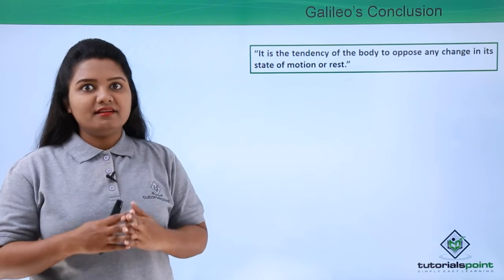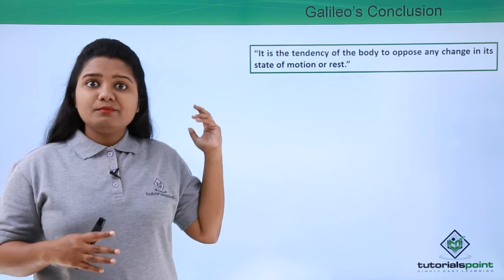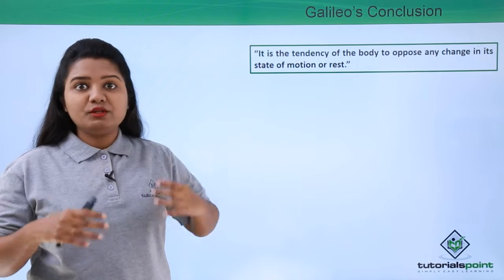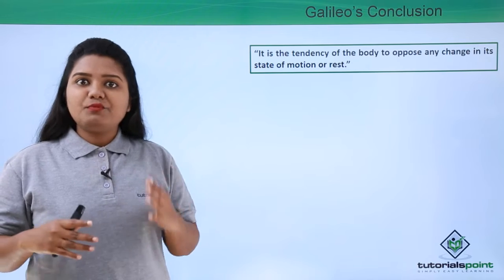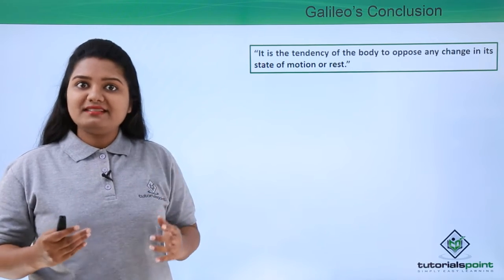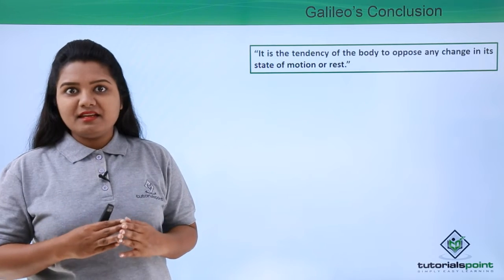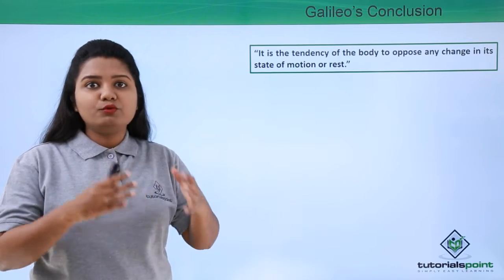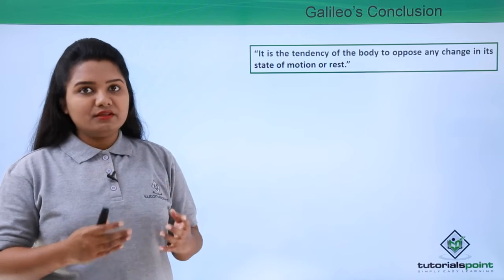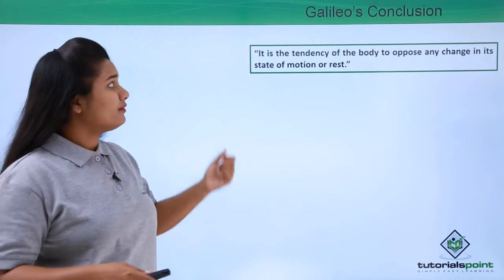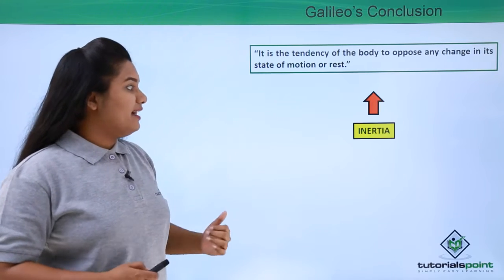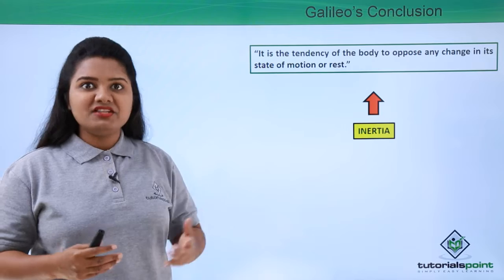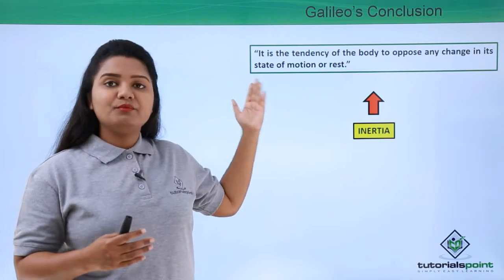Now suppose a body is at rest. That body would continue to be at rest — it is the tendency and property of that body to remain at rest, and it would resist any movement. Similarly, a body which is in motion resists any change in its state of motion, meaning it would resist coming to a stop. This tendency is known as inertia. Inertia is a property of a body by virtue of which it resists a change in its state of motion or rest.